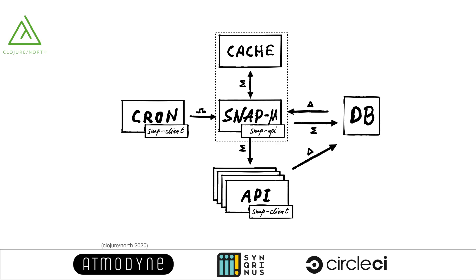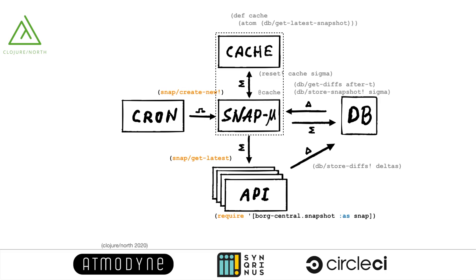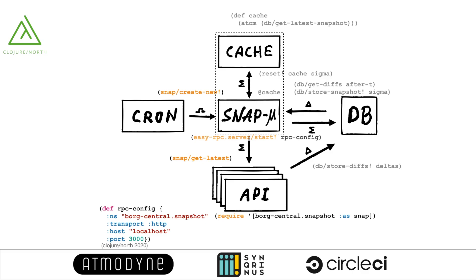This is where EasyRPC can be helpful. On the server side, all we need to do is write a one-liner to start the RPC server and pass the config. The config is fairly simple — it has the namespace we want to serve the functionality of, the protocol (in this case HTTP), and the URL and port where the service is deployed. On the client side, we create an RPC client and tweak the call sites a little bit. Instead of invoking the library directly with snap/create-new, we make a remote call by passing the function name to the client. The same goes for get-latest.